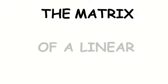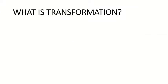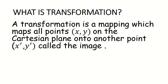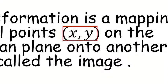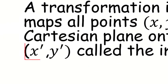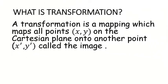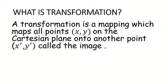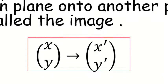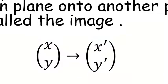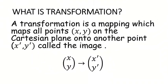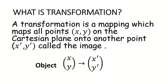This video teaches the topic: the matrix of a linear transformation. A transformation is a mapping which maps all points XY on the Cartesian plane onto another point X prime Y prime, called the image. So XY, which is the object, always maps onto the image X prime Y prime. XY is the object, X prime Y prime is the image.